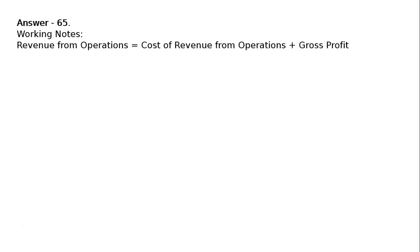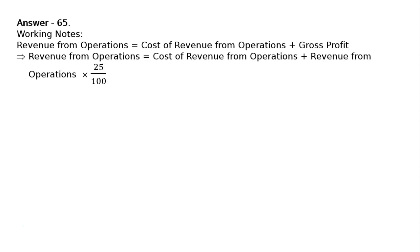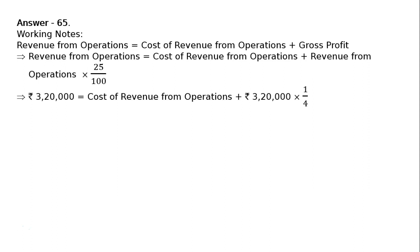Working notes: Revenue from operations equals cost of revenue from operations plus gross profit. This implies revenue from operations equals cost of revenue from operations plus 25% of revenue from operations, which equals ₹3,20,000. Hence, gross profit is one-fourth of sales.